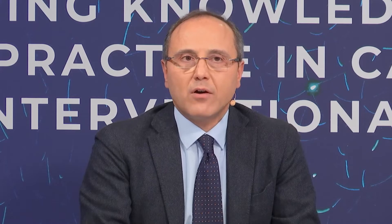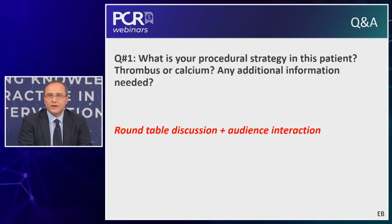Thank you very much, Flavio, for this introduction. Why don't we display the first question? Please be encouraged to interact with us via the chat box — key questions will pop up at certain points in this webinar. So what would be your procedural strategy in this patient? You heard the history, you saw this frame of coronary angiogram. Do you think this image is a thrombus or a calcified lesion on the proximal LAD? Or would you need additional information before moving further? While you reflect on this question, I'd like to hear comments from Margaret and Javier.